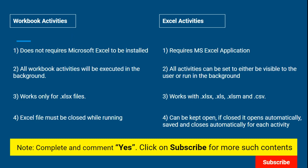For example, if you have one lakh rows of data to process every day, I would prefer Workbook activities because they run in the background and take less time compared to Excel activities. However, there is a limitation: the file must be .xlsx. If it's a CSV you'll need to convert it to .xlsx first. So there are advantages and disadvantages to both, and you should know how each set of activities works.